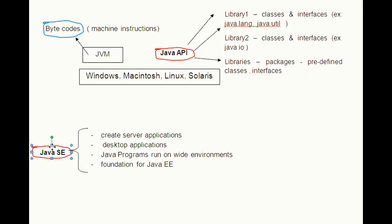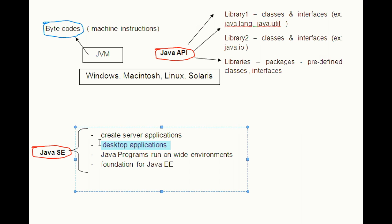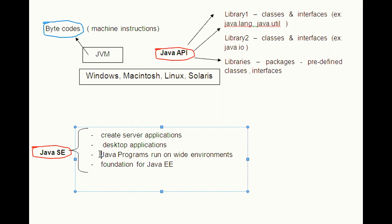The Java standardization platform allows you to develop and deploy server applications and desktop applications. Applications or programs written in the Java standardization platform can be run on a wide variety of environments. It provides the foundation for Java.